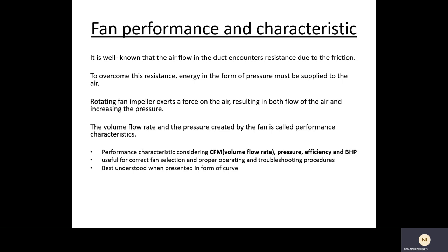There are four items to consider for the performance characteristic of a fan: the volume flow rate in CFM (cubic feet per minute), the pressure, the fan's efficiency, and the BHP (brake horsepower). These are useful for correct fan selection.